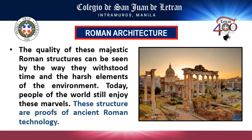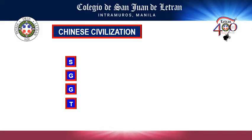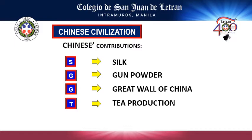Let's now proceed to the Chinese civilization and their contributions. Just remember the acronym SGT: S stands for silk, G stands for gunpowder, G stands for Great Wall of China, and T stands for tea production.